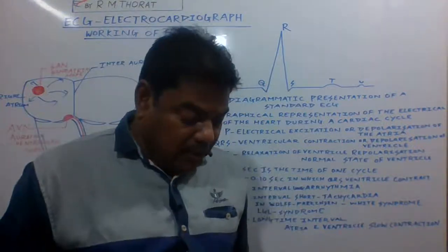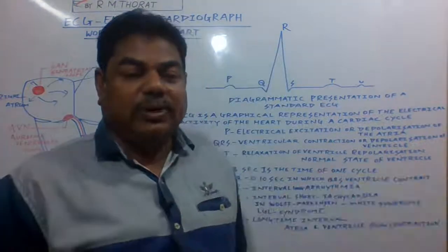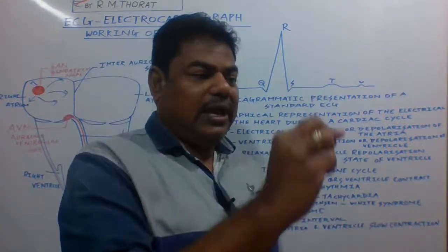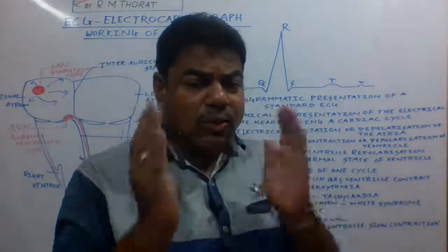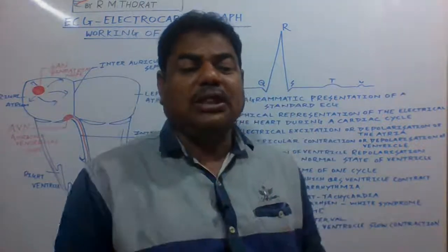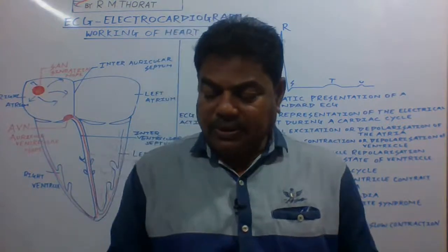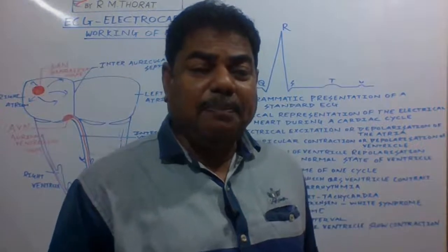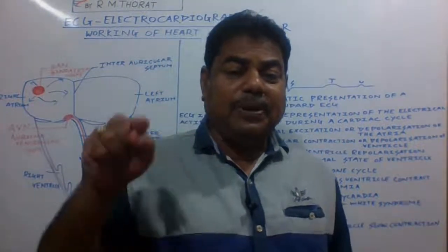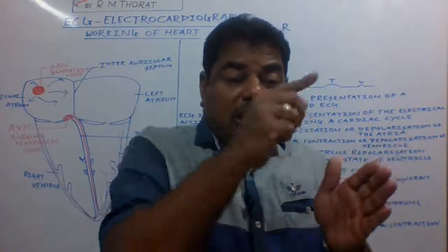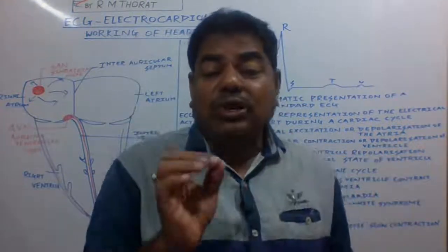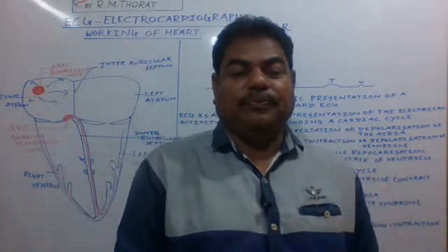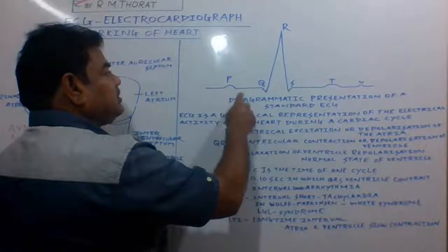A device is placed on the patient, and the graph that comes on the monitor we call it an ECG — electrocardiograph. This electrocardiograph is characterized by certain features. The normal ECG drawn on the board consists of waves labeled P, Q, R, S, T, and U.